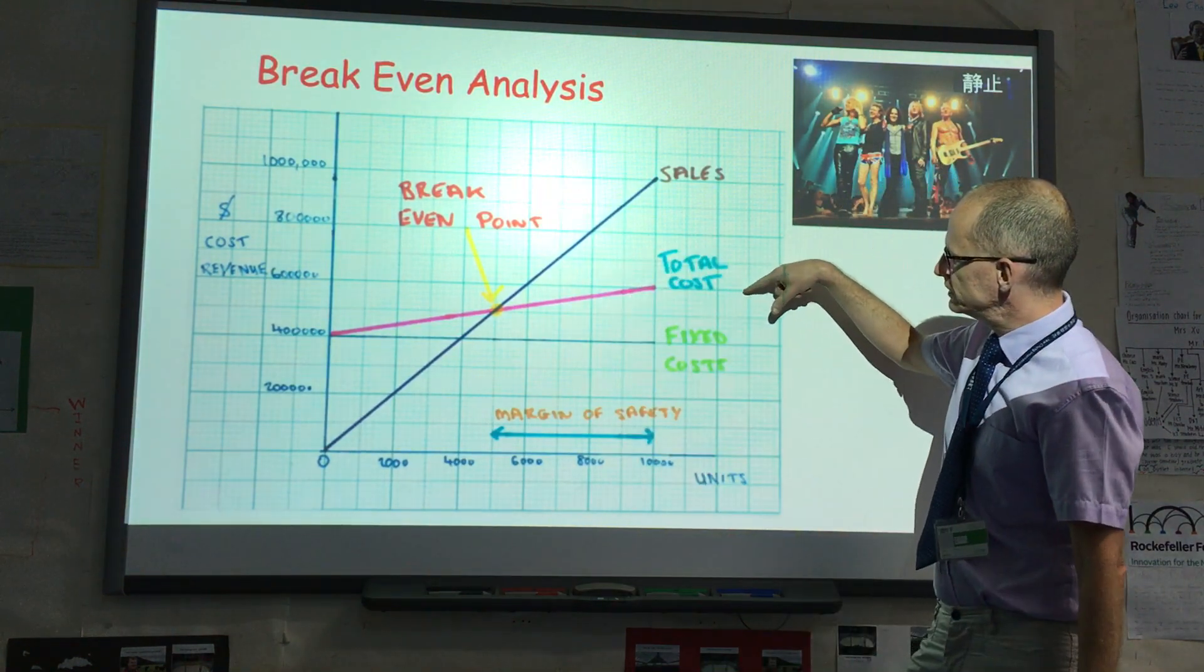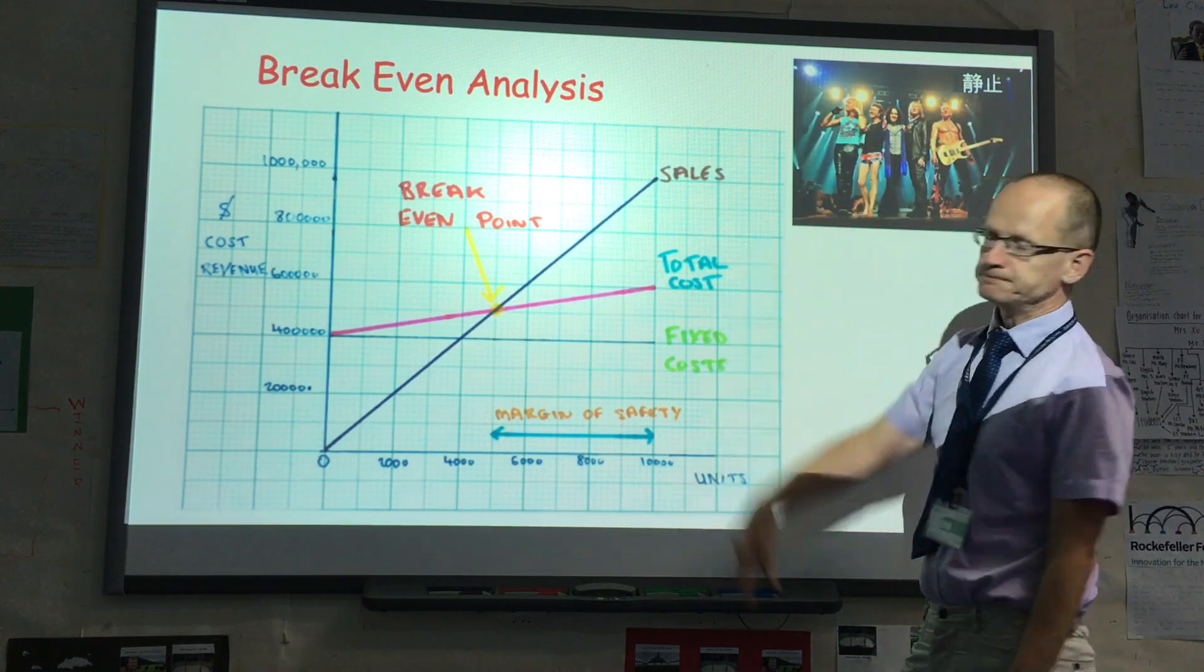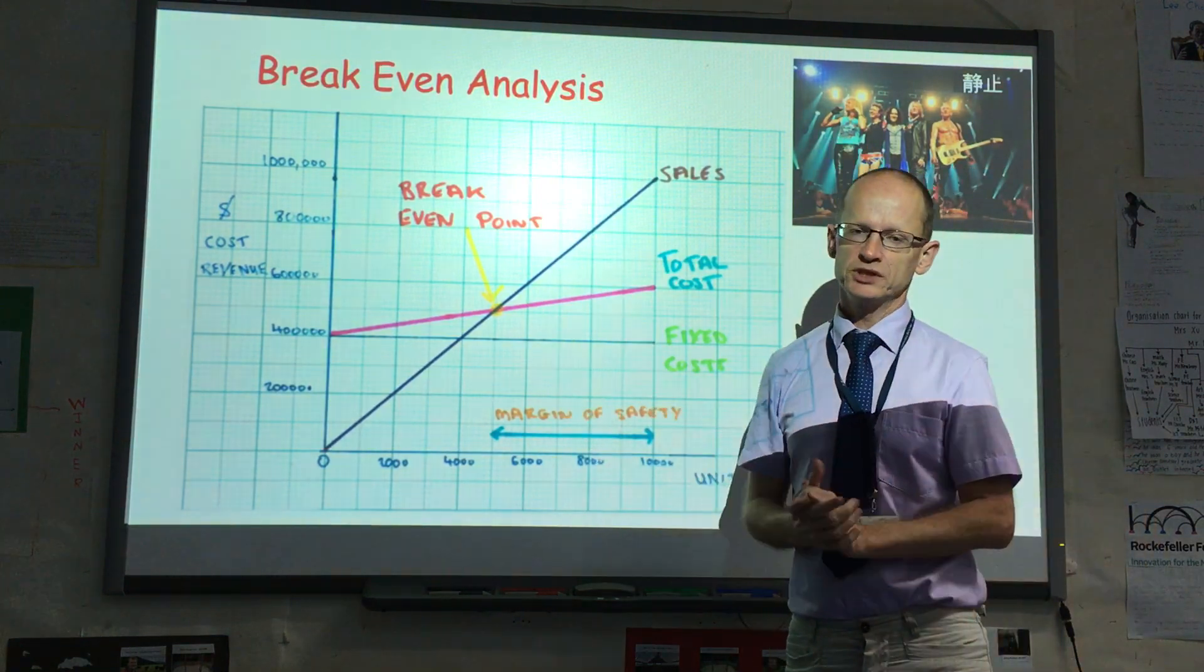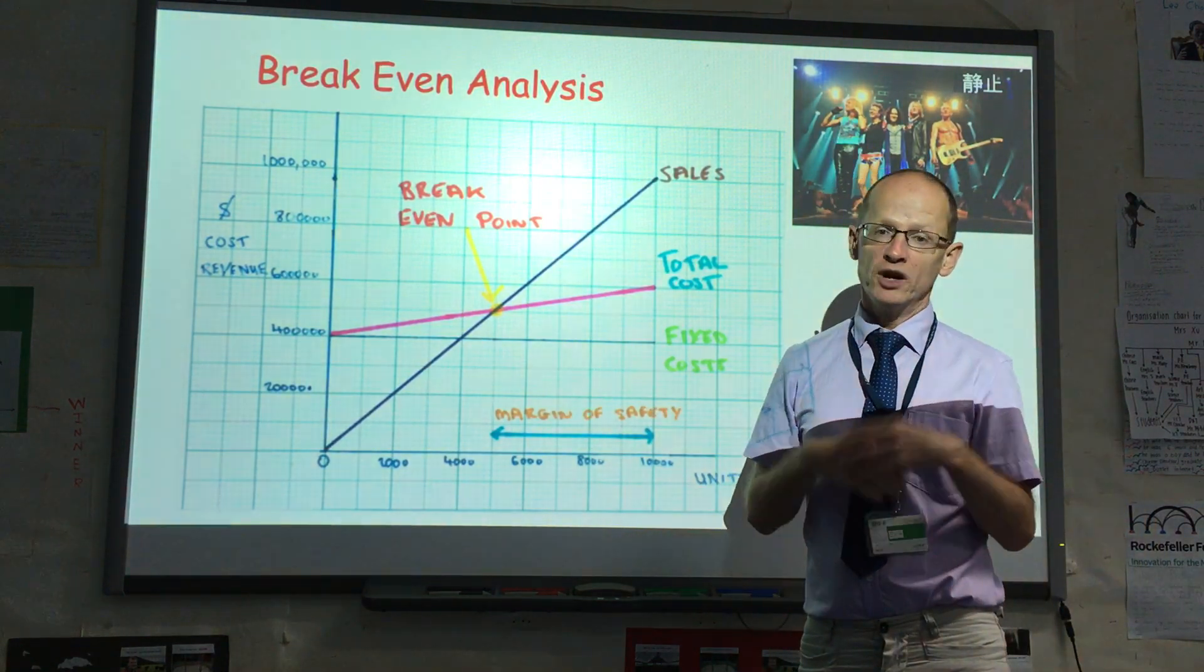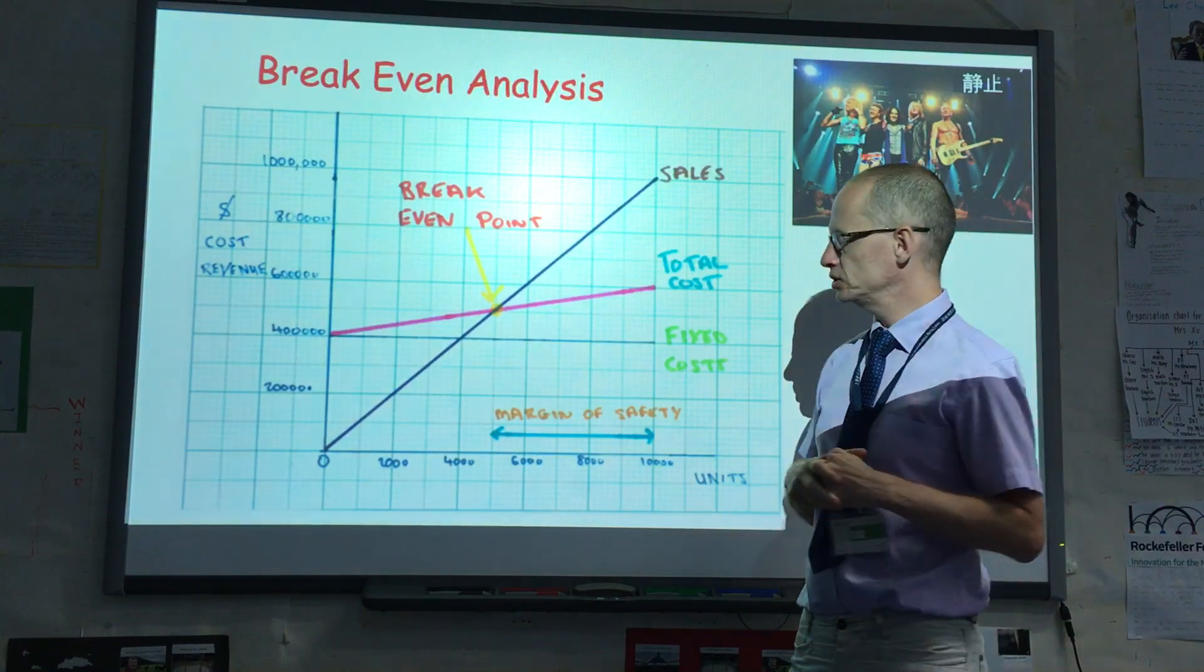With diseconomies of scale, obviously then it will go more like that. With diseconomy scale, the variable cost increases as production increases.